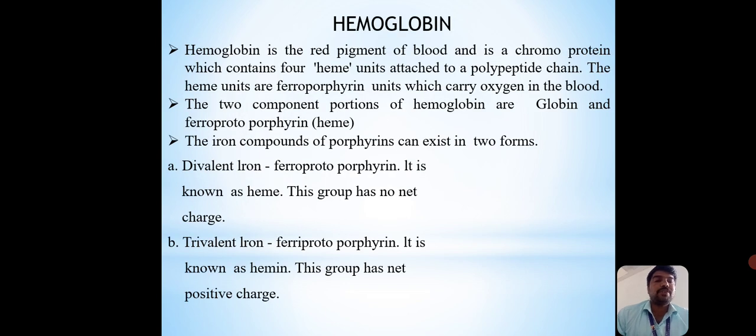Hemoglobin is the red pigment of blood and is a chromoprotein which contains four heme units attached to a polypeptide chain. The heme units are ferroporphyrin units which carry oxygen in the blood. The two component portions of hemoglobin are globin and heme.